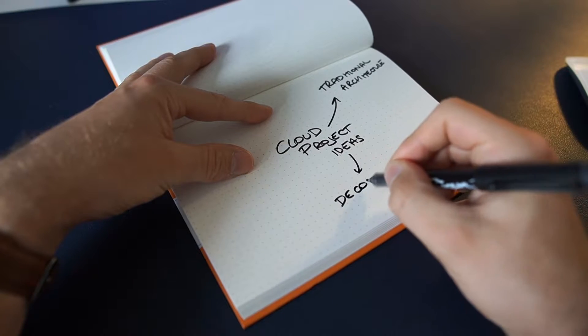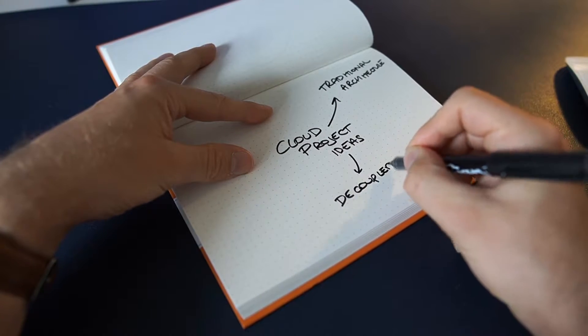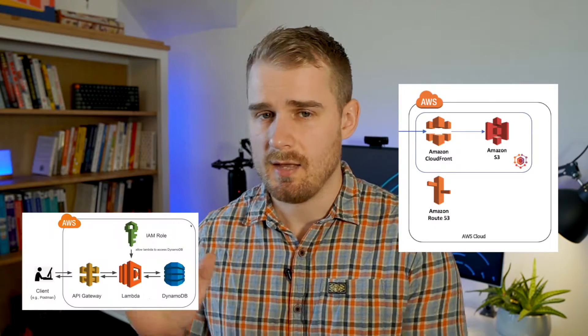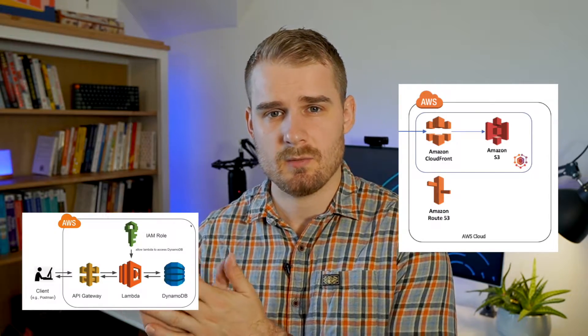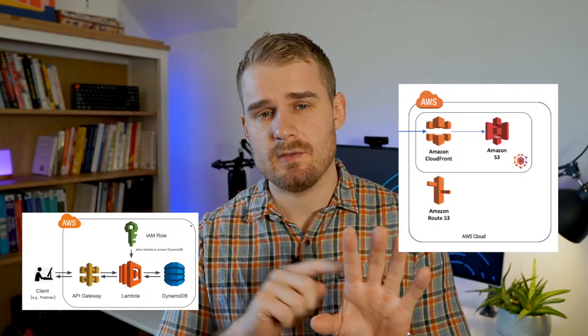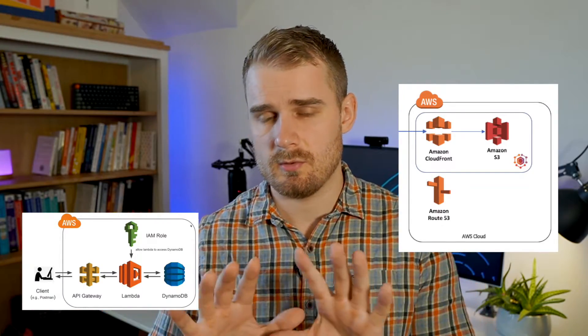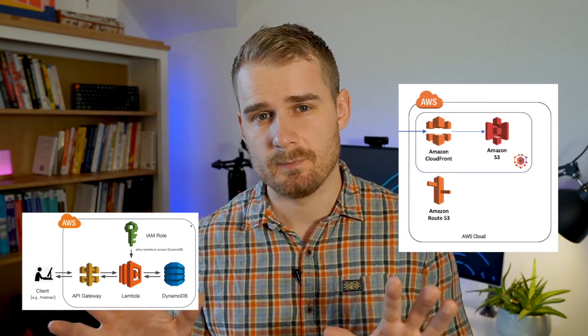Project two I'd call a decoupled web application. This is a very conventional type of architecture you'll see in the real world: you have a front-end side of your site deployed in a static fashion, and then a back-end driven through APIs. Those two parts communicate with each other but are built entirely separately.